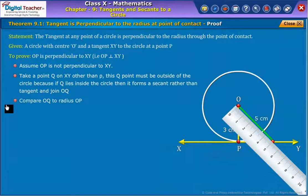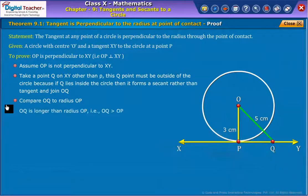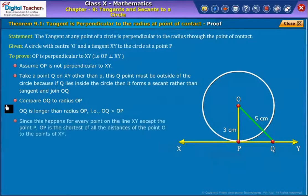Compare OQ to radius OP. We observe that OQ is longer than radius OP. Since this happens for every point on the line XY except the point P, OP is the shortest of all the distances from point O to the points of XY.